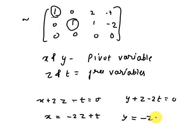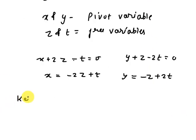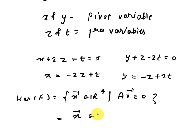So that means Y, this equation we get here from here, so Y is equal to minus Z plus 2T. Now kernel F is, kernel of F is X bar belongs to R4 such that A X bar equals 0, which is equal to X bar belongs to R4. A is equivalent to U matrix, U X bar which is equal to 0.